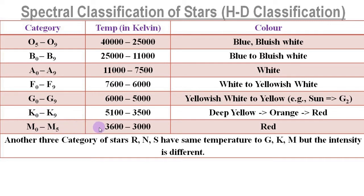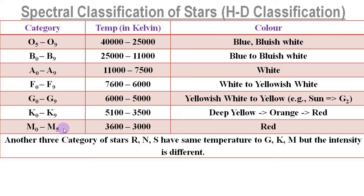The M category stars have temperature 3,600 Kelvin to 3,000 Kelvin, and their color is red. M category stars end with M5 instead of M9 because stars with temperature lower than 3,000 Kelvin were not found, but may exist. That is why M category ends with M5. If in future we find stars with temperature lower than 3,000 Kelvin, then we can categorize them as M6, M7, up to M9 — so there is a provision for that.